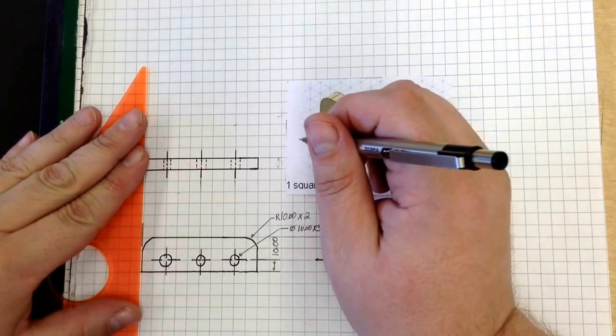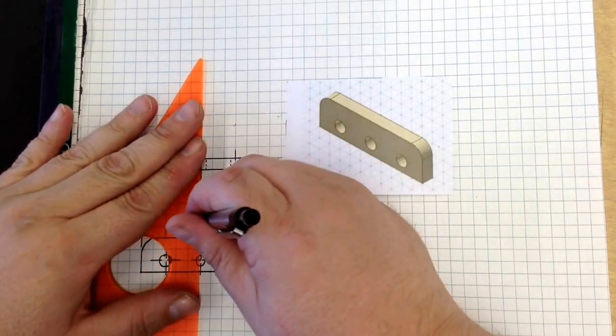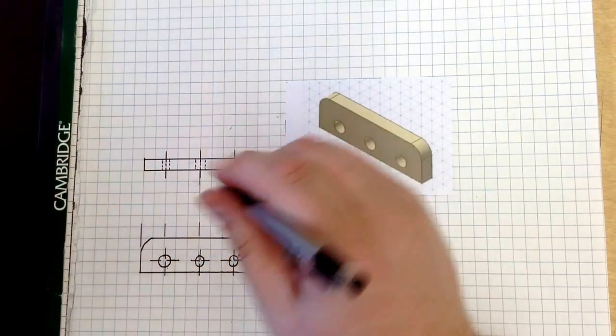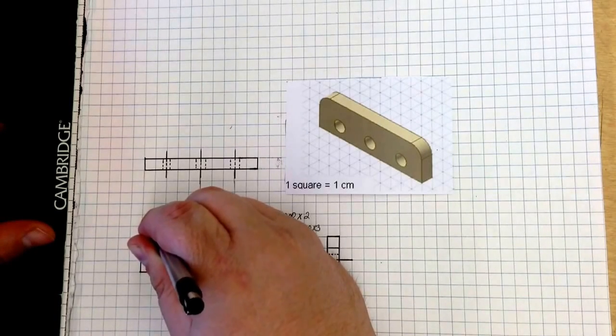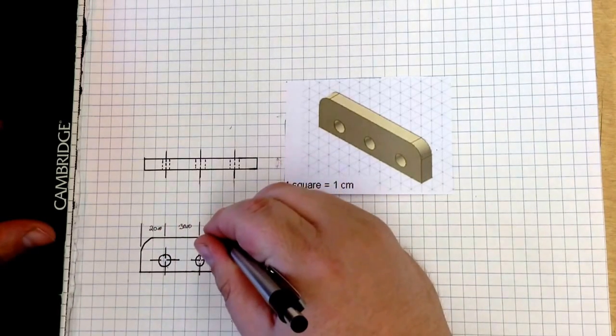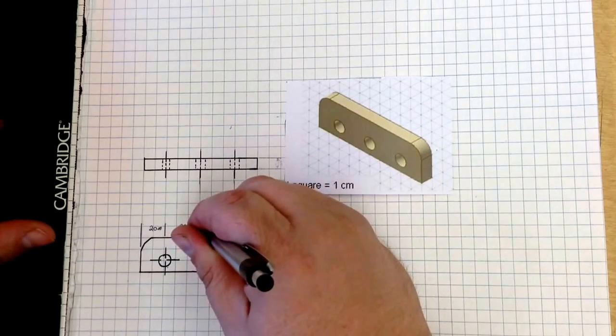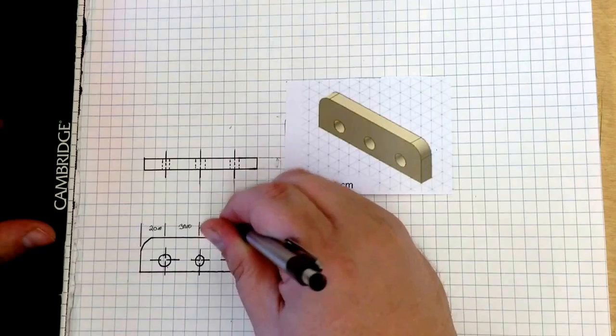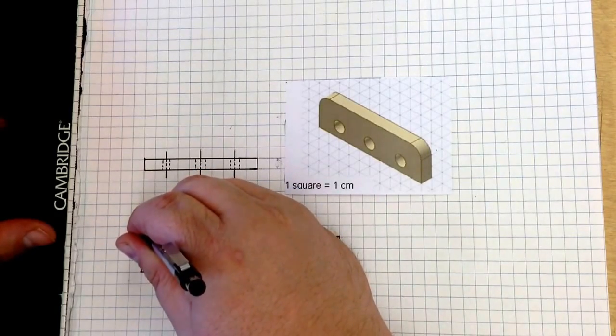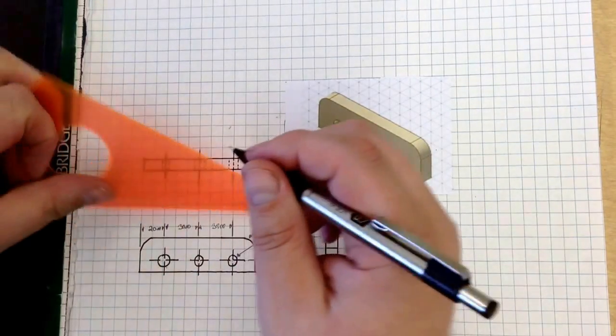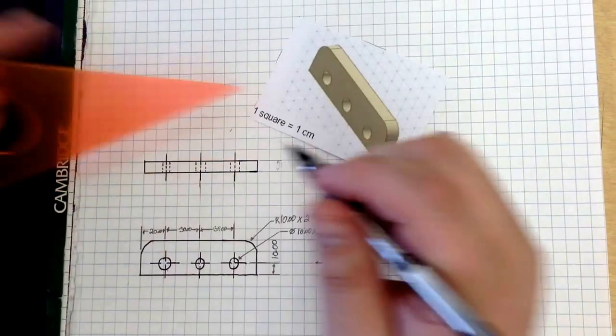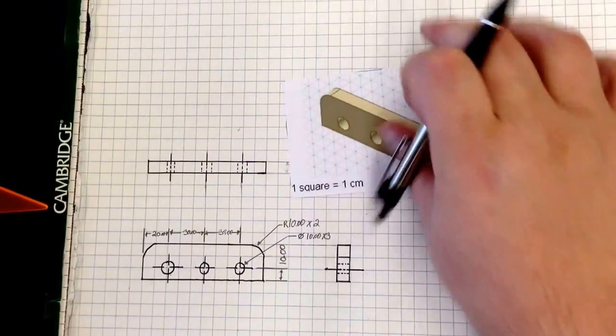So I'm going to draw a dimension line right there, dimension line there, dimension line there, and finally dimension line there. This is 20 millimeters, or 2 centimeters. This is 30 millimeters, or 3 centimeters, and this is 30 millimeters, or 3 centimeters. Draw my arrows in here, and connect them in there. That tells us where those holes are located.